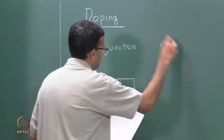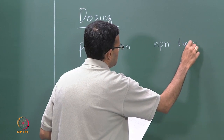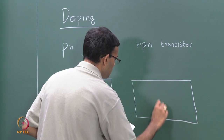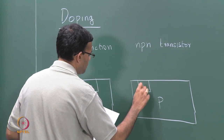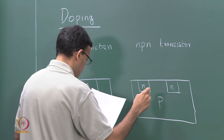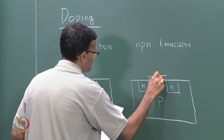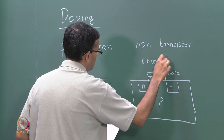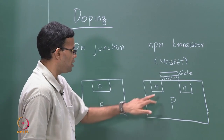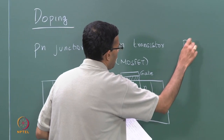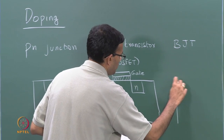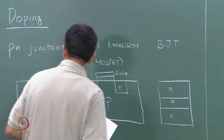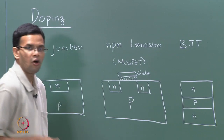We also looked at junctions in terms of transistors. For a simple n-p-n transistor, you have a p-type with two regions doped n-type. There is an oxide layer and then there is the gate — this is the structure of your MOSFET, where we have to dope specific regions. We have also seen the bipolar junction transistor, where specific regions with depth have different dopants: n, p, and n, forming the emitter, base, and collector, all with different dopants.